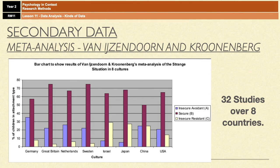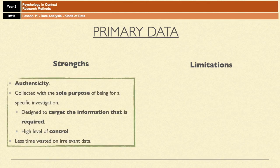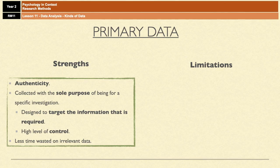So that is a meta-analysis. Let's have a look at a few pros and cons of primary and secondary data. The obvious strength of primary data is that it is authentic data — data that is collected with the sole purpose of being used in a specific investigation. That means it is designed to target the information that's required, and it also gives the researcher a high level of control about how the data is collected.